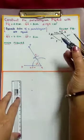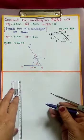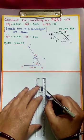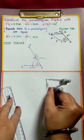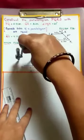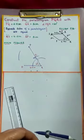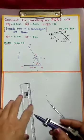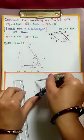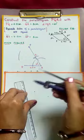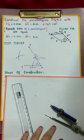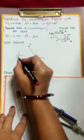Next, with R as center, taking 4.5 cm radius, draw another arc. Starting point at 0, ending point at 4.5. Take this radius of 4.5 cm, place your needle end at R, and draw an arc. Now, with P as center, taking 3 cm radius, cut this arc. Place your needle end at P and cut this arc. These two arcs intersect at S. Name this point as S.